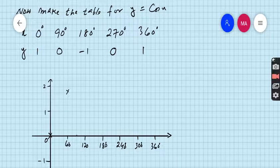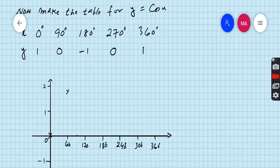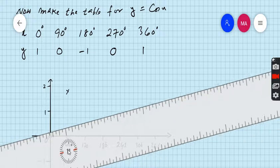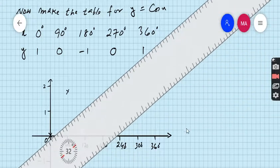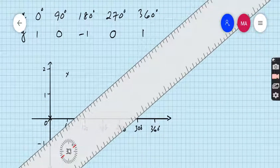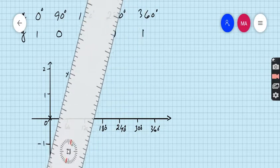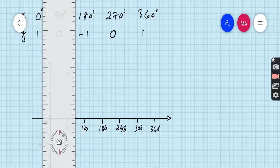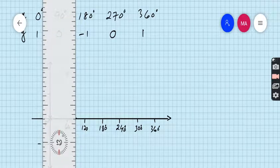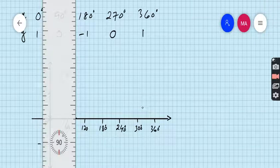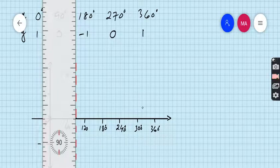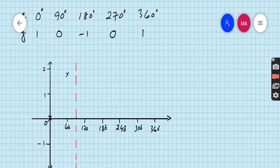And for 90 the value is undefined, so we have to make a dotted line at 90 degrees. So this is the first asymptote.